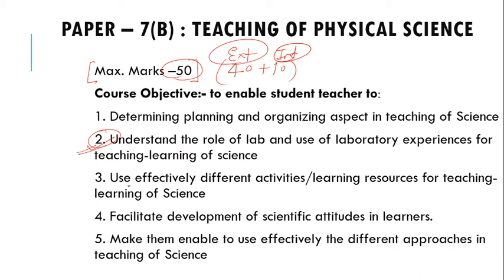The third objective is to use effectively different activities and learning resources for teaching and learning of science. This includes teaching learning materials, instructional materials, HOTS — high order thinking skill questions — and designing activities that will be beneficial for the learner to grow in science. You will learn how to create those types of activities in this paper.